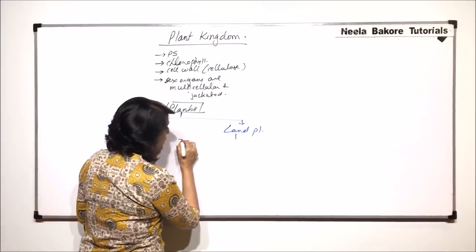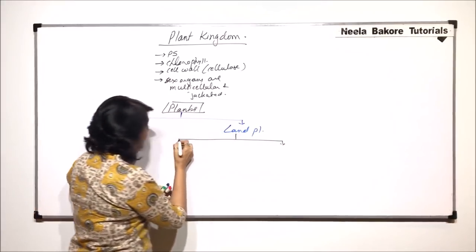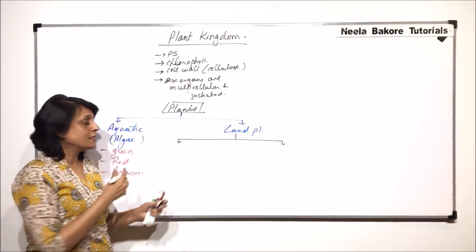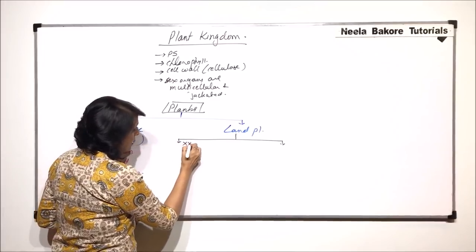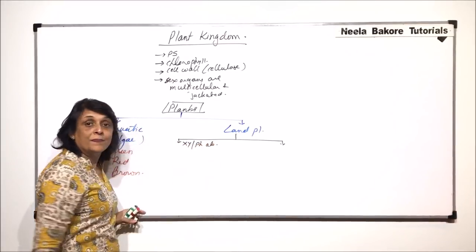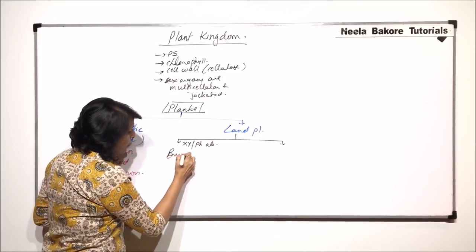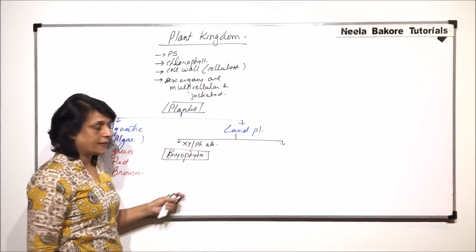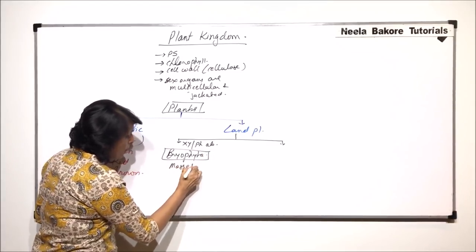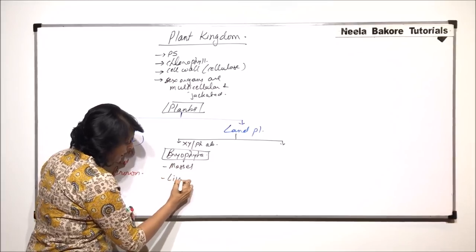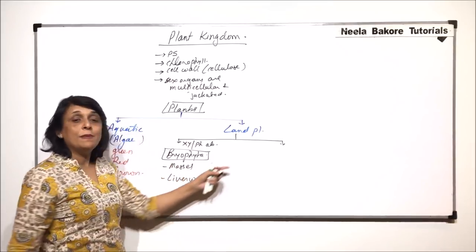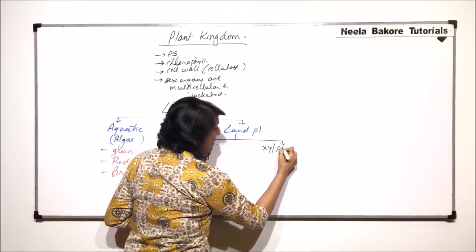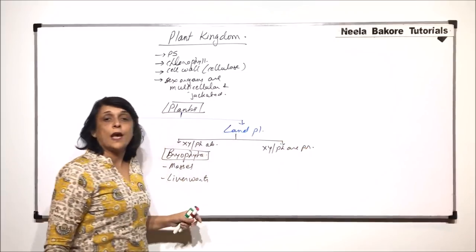Land plants are further classified on the basis of whether they have vascular tissue or not. Vascular tissue means xylem and phloem. Where xylem and phloem are absent, these are the bryophytes — placed under group Bryophyta — in which we would be talking about mosses and liverworts. The second group is where xylem and phloem are present.